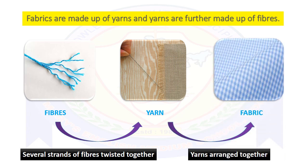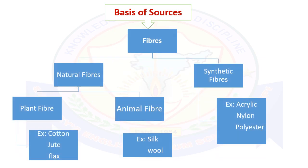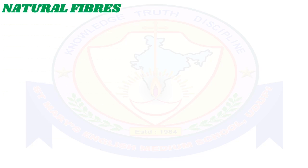Next question: where do we get fibers from? On the basis of sources, we obtain fibers from two sources — natural fibers and synthetic fibers. We obtain natural fibers from plants or animals. For example, plant fibers include cotton, jute, and flax; animal fibers include silk and wool. Synthetic fibers are man-made or artificial fibers. Examples are acrylic, nylon, and polyester.